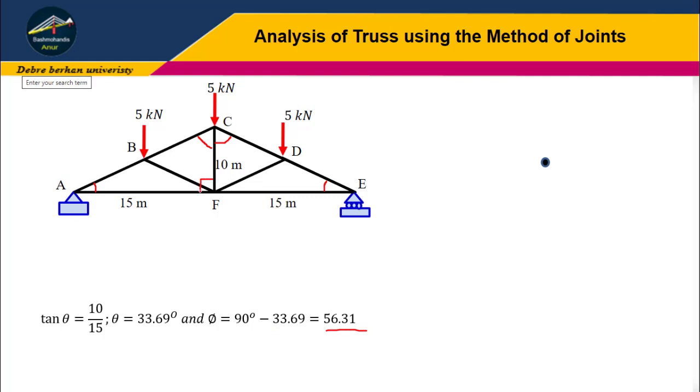For support reactions, since this is a symmetric truss, the total downward force is 5 plus 5 plus 5 equals 15 kilonewtons. Therefore supports A and E share the same vertical force: 15 divided by 2. So Ay equals 7.5 kilonewtons and Ey equals 7.5 kilonewtons.